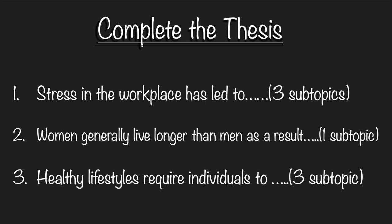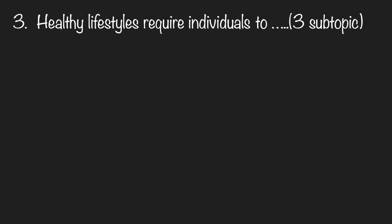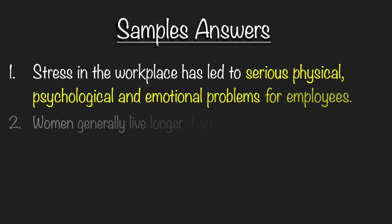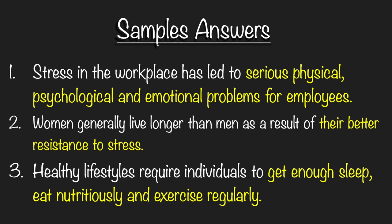So now let's do some exercises. Complete the thesis. Number one: 'Stress in the workplace has led to...' — give three subtopics. Number two: 'Women generally live longer than men as a result of...' — give one subtopic. Number three: 'Healthy lifestyles require individuals to...' — give three subtopics. Now that you have your answers ready, here are some examples. Number one: 'Stress in the workplace has led to serious physical, psychological, and emotional problems for employees.' Number two: 'Women generally live longer than men as a result of their better resistance to stress.' Number three: 'Healthy lifestyles require individuals to get enough sleep, eat nutritiously, and exercise regularly.'